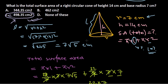This question requires nothing more than knowing the formulas: total surface area = πrl + πr², and slant height l = √(r² + h²). Once you have these formulas, everything is straightforward to solve. That's it, guys — thank you!